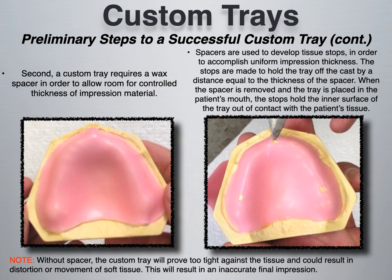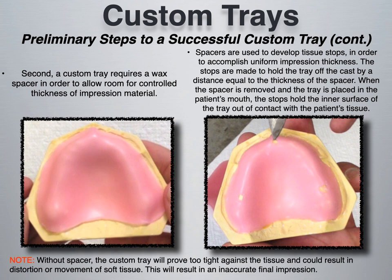Those three spots make initial contact on the tissue, and because they're in tripod formation, they hold the custom tray one millimeter away from the tissue — because the wax was one millimeter thick. This allows for uniform impression material thickness, resulting in a very accurate impression. Without the spacer, the custom tray will be tight against the tissue and could result in distortion or movement of soft tissues, leading to an inaccurate final impression. When placing tissue stops in tripod formation, steer clear of soft and mobile tissue points like the incisive papilla.